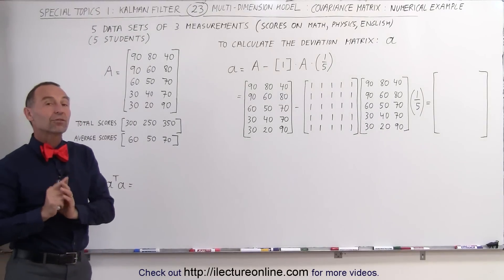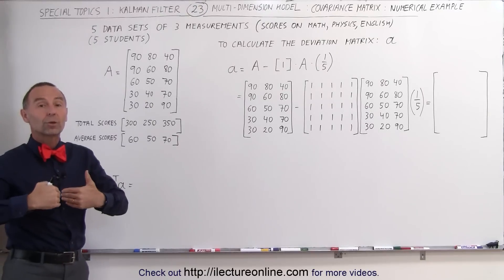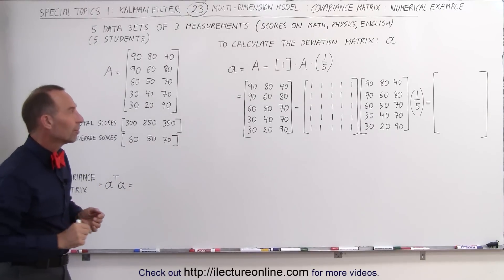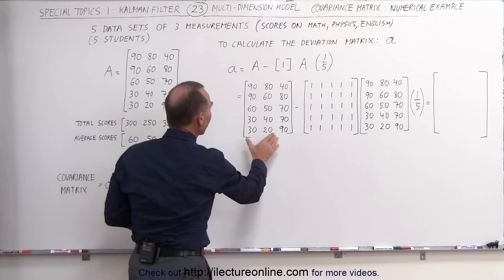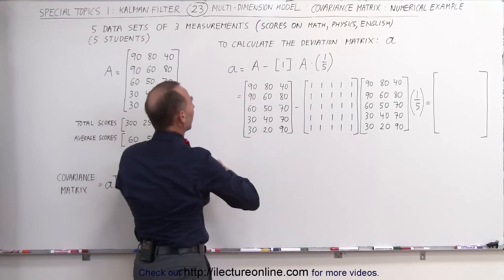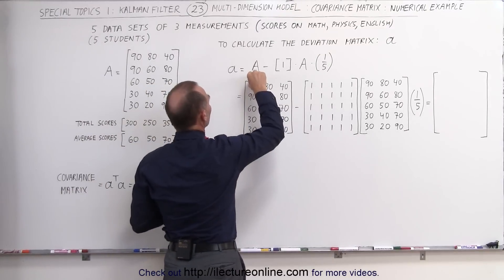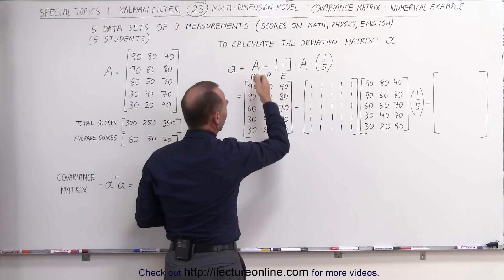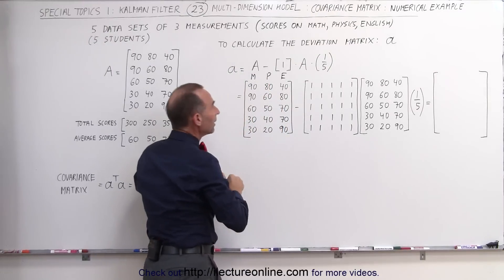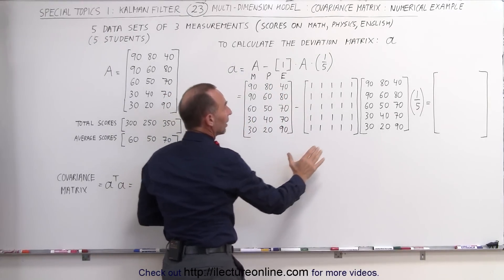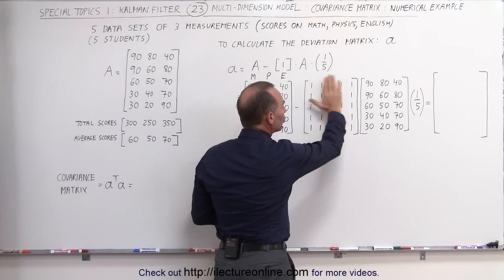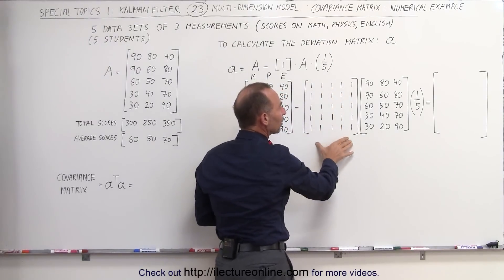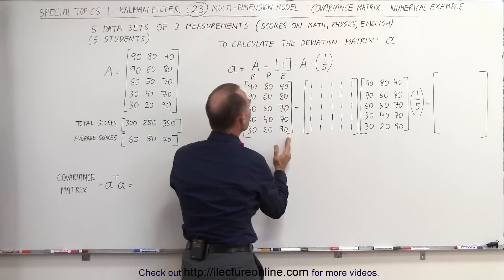What we're trying to do here is calculate the covariance matrix in such a way that we can do this with computer programs. Therefore, we must do it with matrices. So we've built a matrix that contains the scores — the scores for math, the scores for physics, and the scores for English. Now we subtract from that matrix what we call the unity matrix, where we have ones for all the columns, multiplied times this same matrix.